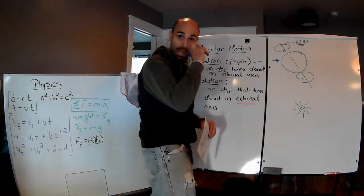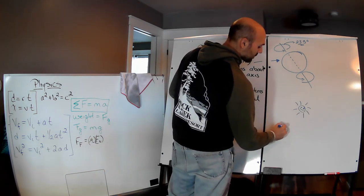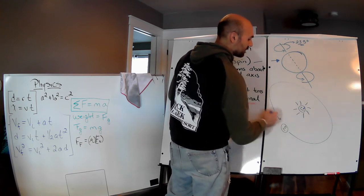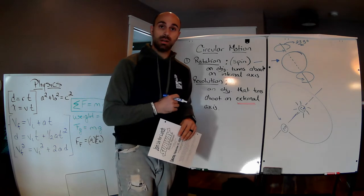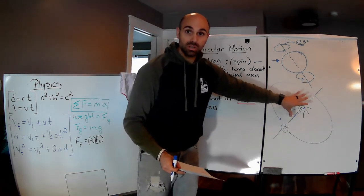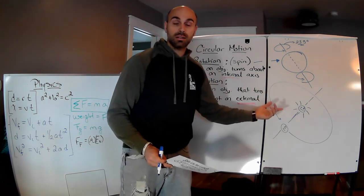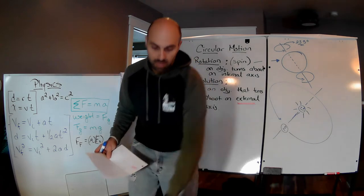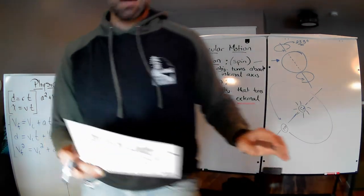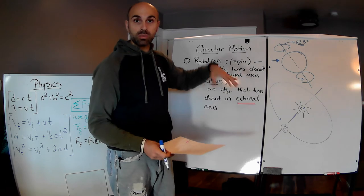For revolution, we have our Sun — nice and bright, giving us energy. Then we have the Earth, traveling in an ellipse shape around the Sun. The Earth is actually traveling around an external axis — not within itself. It is revolving around the Sun while also rotating around itself. If I walk around this stool in the center, I revolve around the stool — that's what a revolution looks like, as opposed to a rotation.